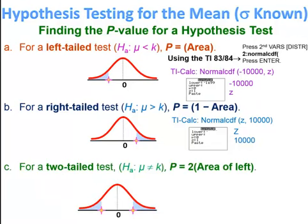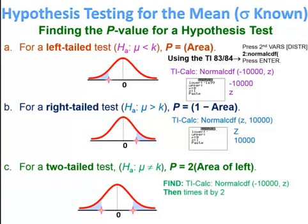For a two-tail test — when the alternative hypothesis states the mean is not equal to some number — you find the area to the left of the z-score and then double it, because there are two shaded tails. So the p-value equals 2 times the area to the left.